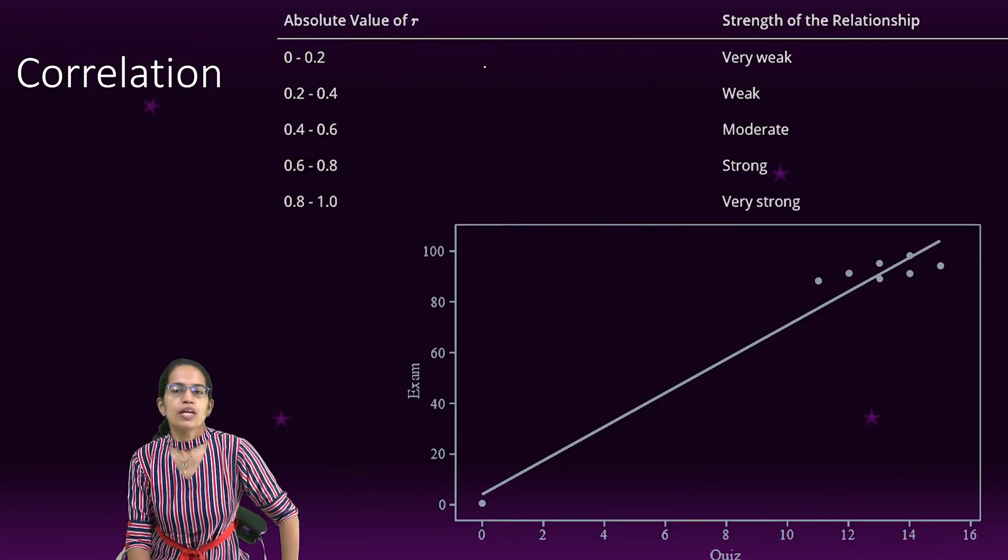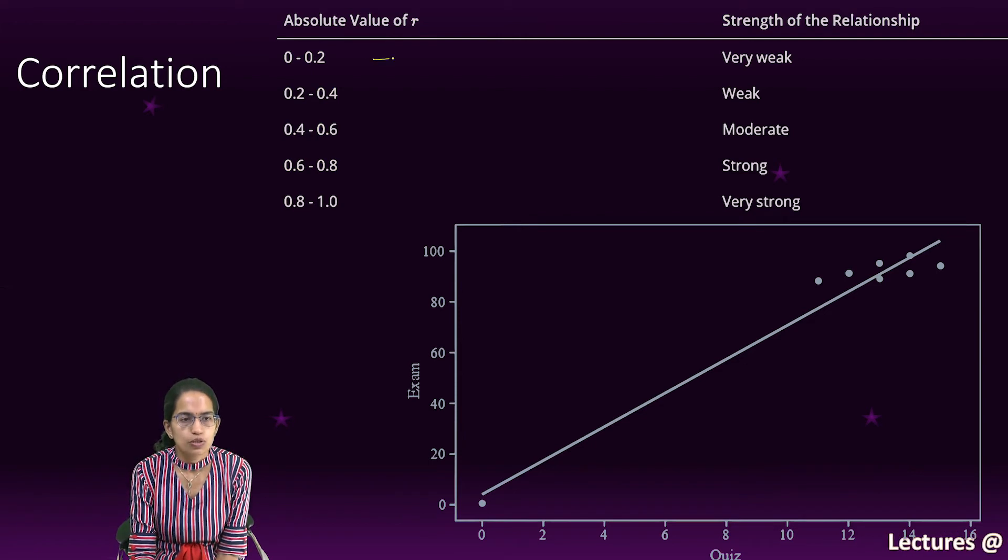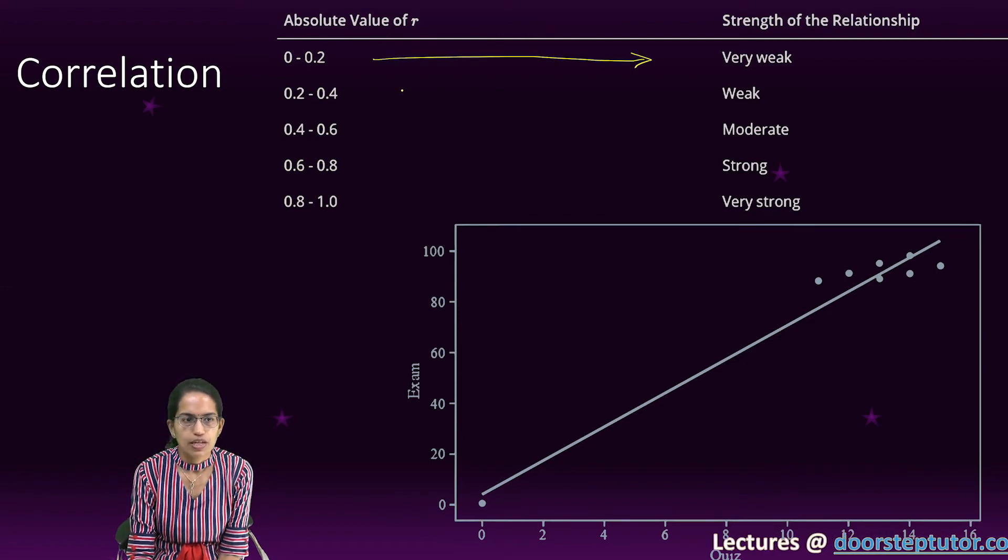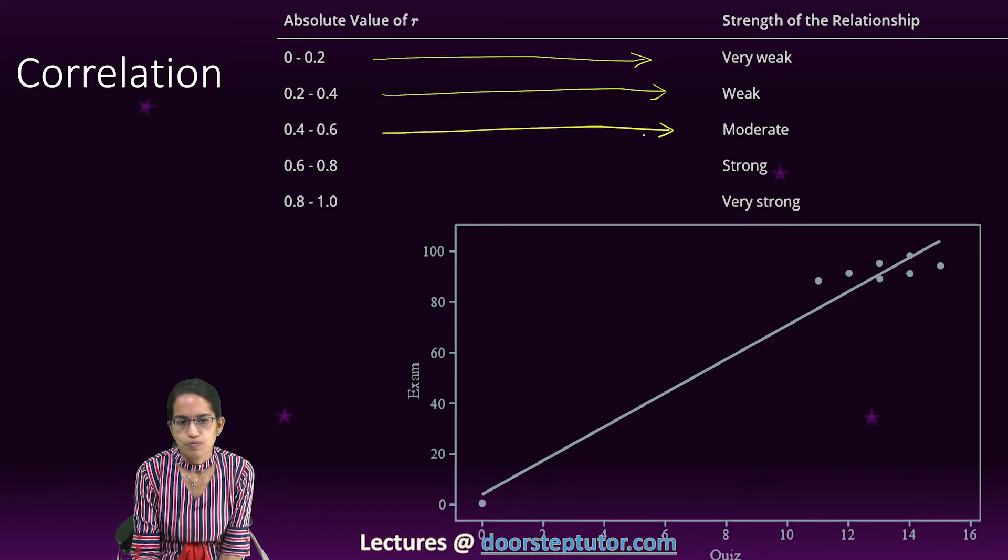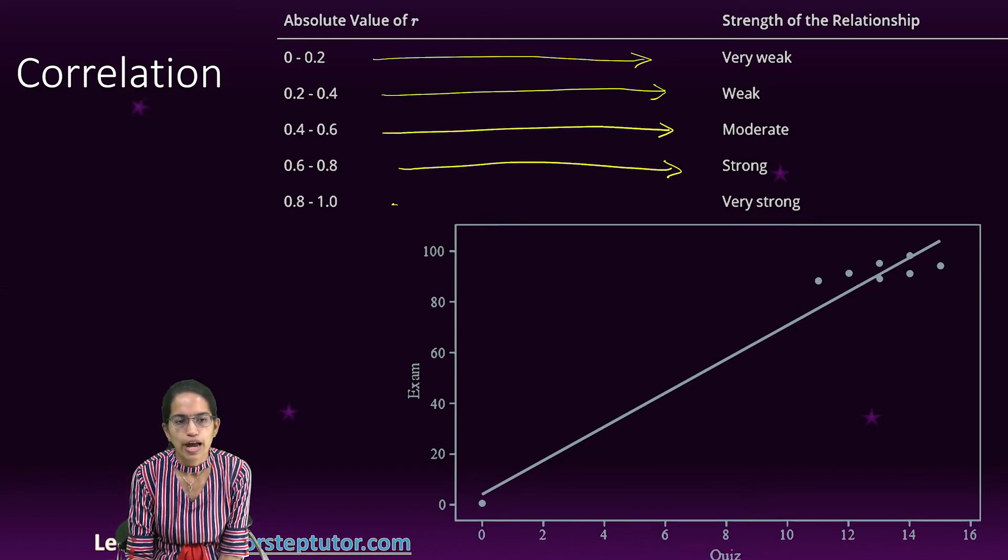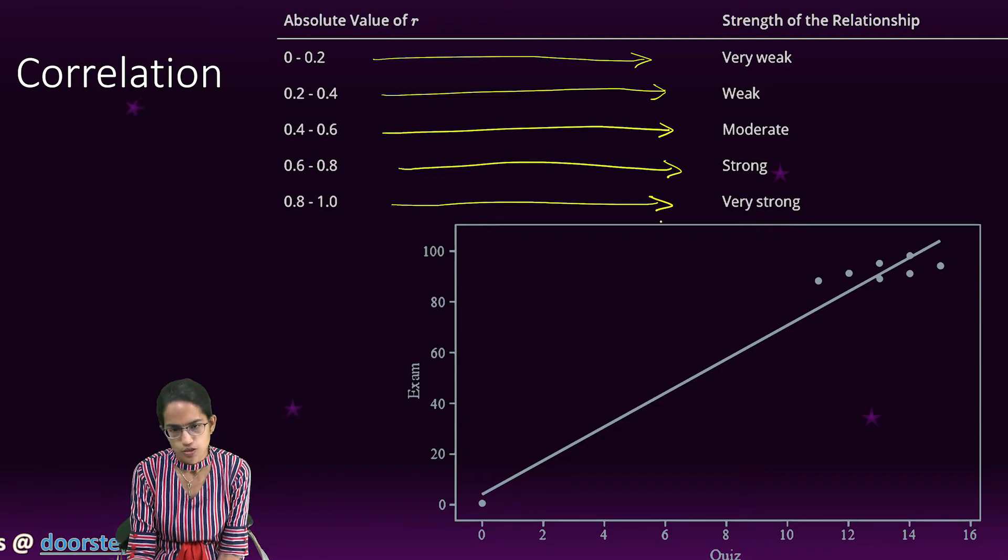So as we can say, from 0 to 0.2 we call it very weak, 0.2 to 0.4 is weak, 0.4 to 0.6 is moderate, 0.6 to 0.8 is strong, and 0.8 to 1 is very strong.